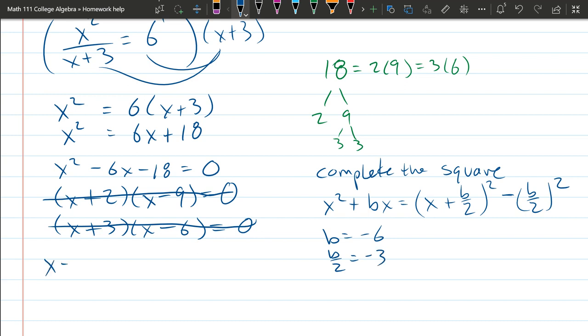So for us, b is negative 6. So b over 2 is half of that, negative 3. So we have x minus 3 squared minus b over 2, which is negative 3 squared. That takes care of this part right there. And now we still have that minus 18 equals 0. So negative 3 squared is 9, minus 9, minus 18.